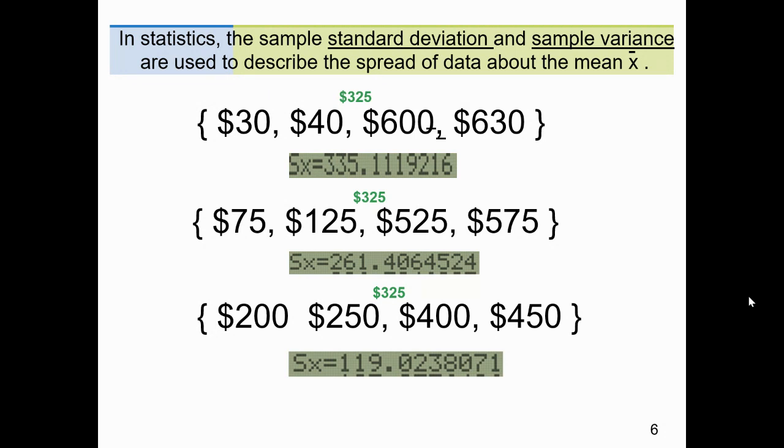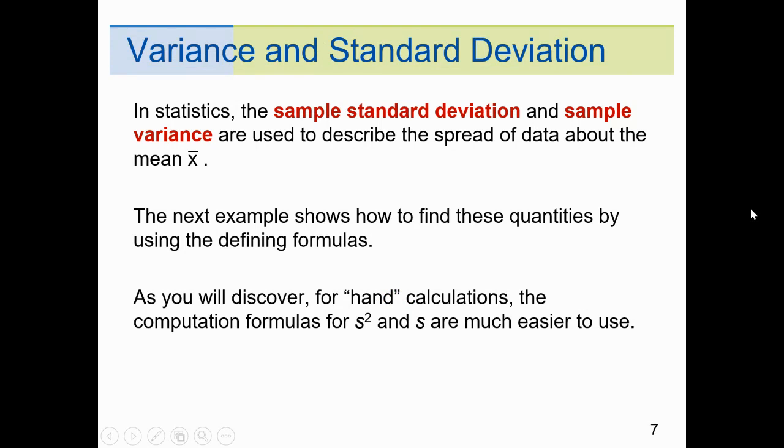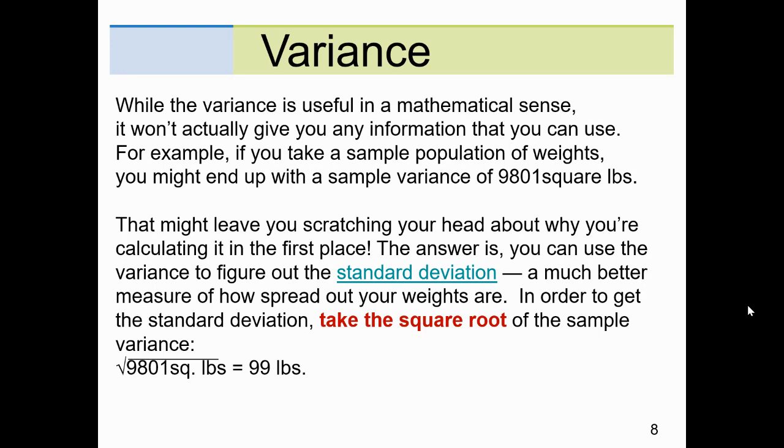Standard deviation and sample variance. I'll tell you up front, the calculator will give you the standard deviation. I'm going to show you how you find the sample variance. Once again, sample standard deviation and sample variance are used to describe the spread of data. While the variance is useful in a mathematical sense, it won't actually give you any information you can use. For example, if you take a sample population of weights, you might end up with a sample variance of 9,801 square pounds. That may leave you scratching your head as to why you're calculating in the first place.